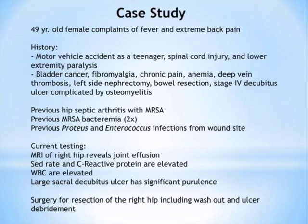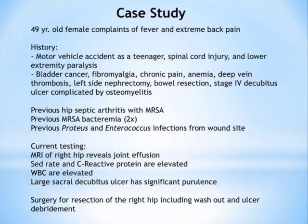We begin with our case study: a 49-year-old female presenting with fever and extreme back pain. Her history is complicated — she was in a motor vehicle accident as a teenager, resulting in severe spinal cord injury and lower extremity paralysis. Due to this paralysis she developed bladder cancer, fibromyalgia, chronic pain, anemia, deep vein thrombosis, a left-side nephrectomy, bowel resection, and a stage 4 decubitus ulcer complicated by osteomyelitis. She had previous hip septic arthritis with MRSA, previous MRSA bacteremia twice, and previous infections with Proteus and Enterococcus from the wound site.